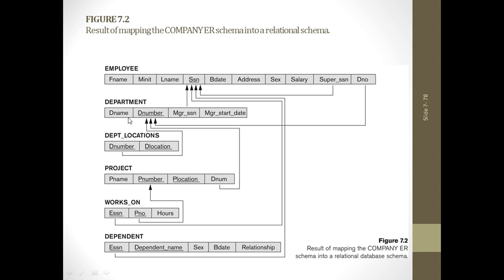The department table has department name, department number, manager SSN (which refers to employee SSN), and manager start date. Locations was a multi-valued attribute, so it is included as a separate table with a foreign key. The project table includes project name, project number, project location, and the department it belongs to — included as a foreign key referencing the department primary key. Works_on was a many-to-many relationship, so the table has employee SSN, project number, and hours as an additional attribute.